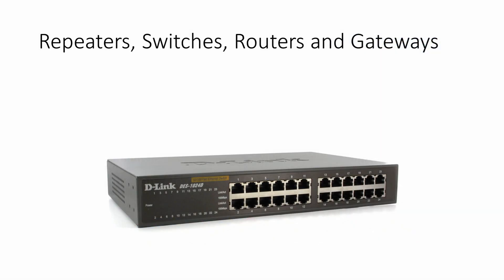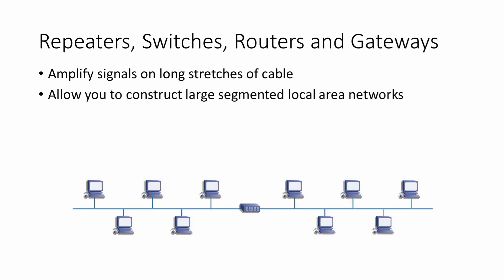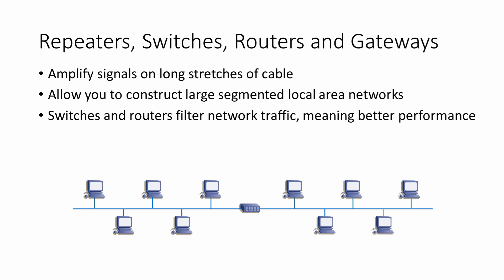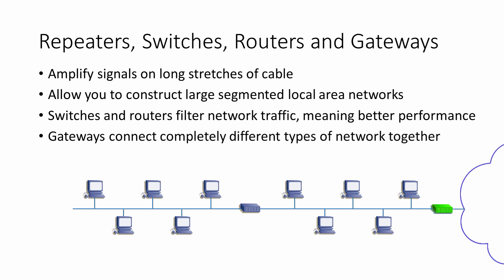Repeaters, switchers and routers are types of connecting boxes. But they can do more than just simplify wiring. They can amplify signals on long stretches of cable. They allow you to construct large segmented local area networks. Switchers and routers filter network traffic, meaning better performance. And a gateway can connect a network to a completely different type of network. Gateways are often used to connect LANs to the internet.